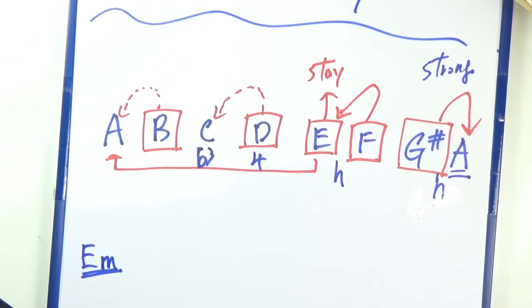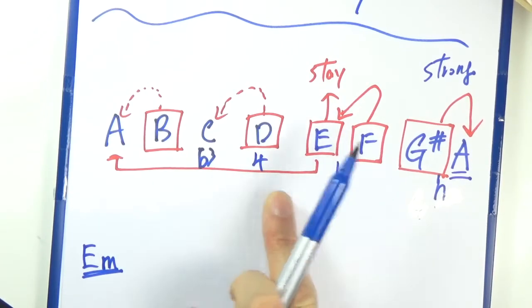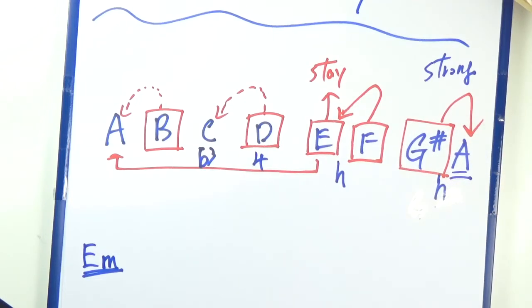So that's all the tone tendency here. The only difference between harmonic minor scale and natural minor scale tone tendency would be this note here. This one has a stronger tendency to resolve to A in the case of harmonic minor.